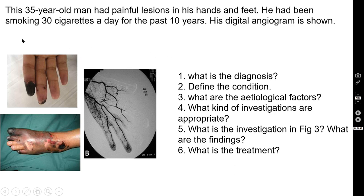Our patient is a 35-year-old man who was having a painful lesion in his hands and feet. You can see this lesion here in the fingers, and this is the lesion in the foot. He had been smoking 30 cigarettes a day for the past 10 years. His digital angiogram is shown here — these three pictures include two clinical pictures and one imaging investigation.